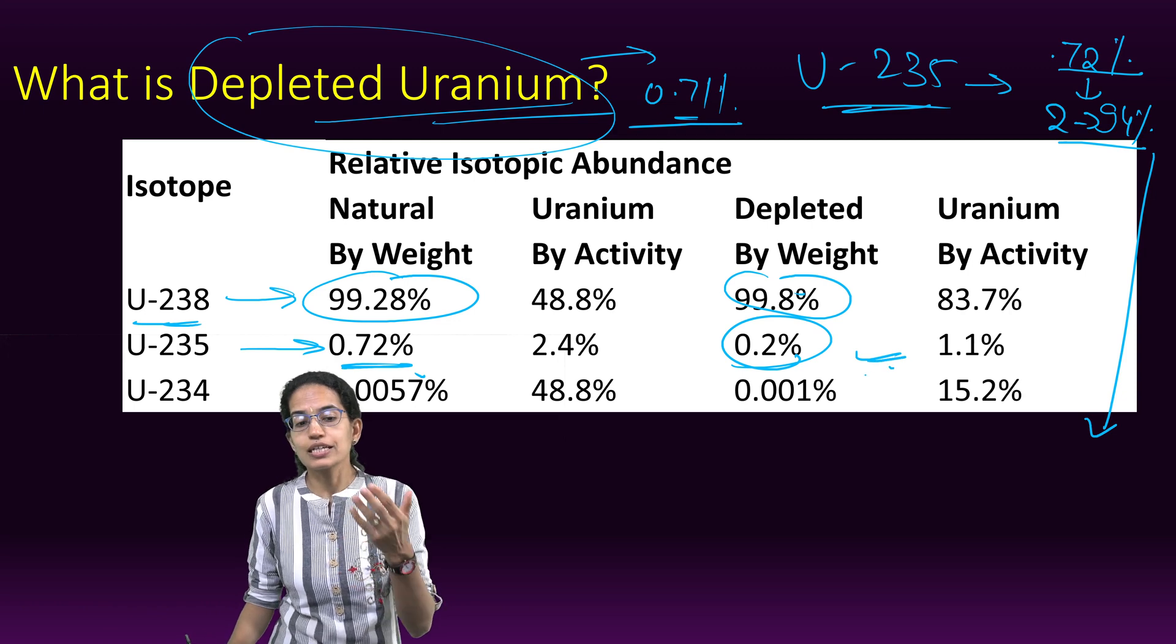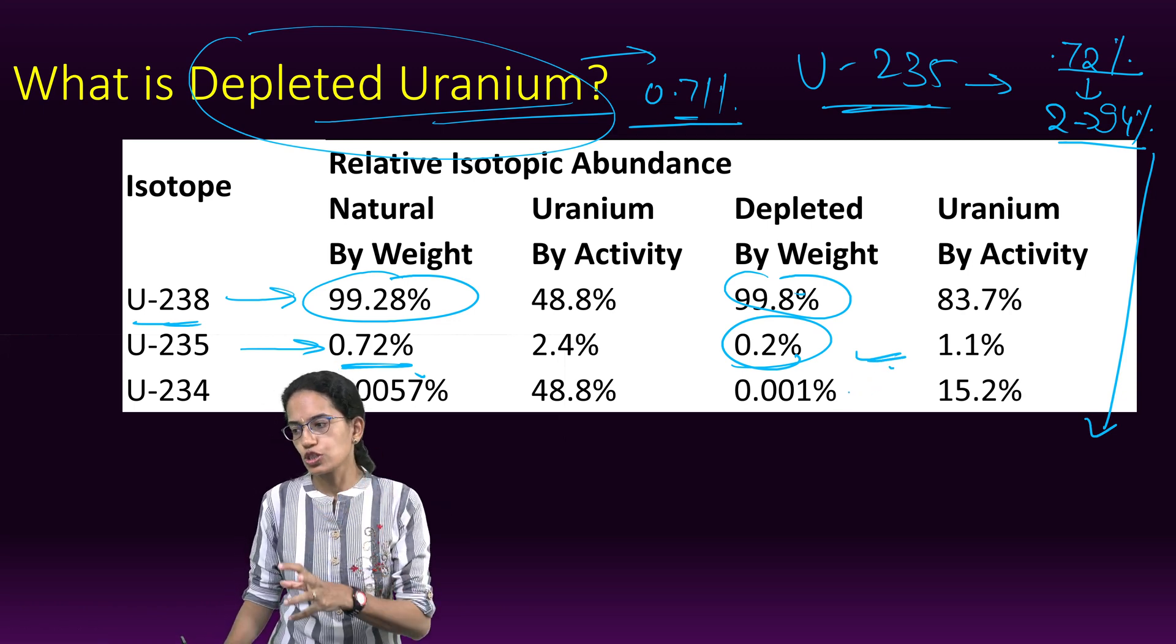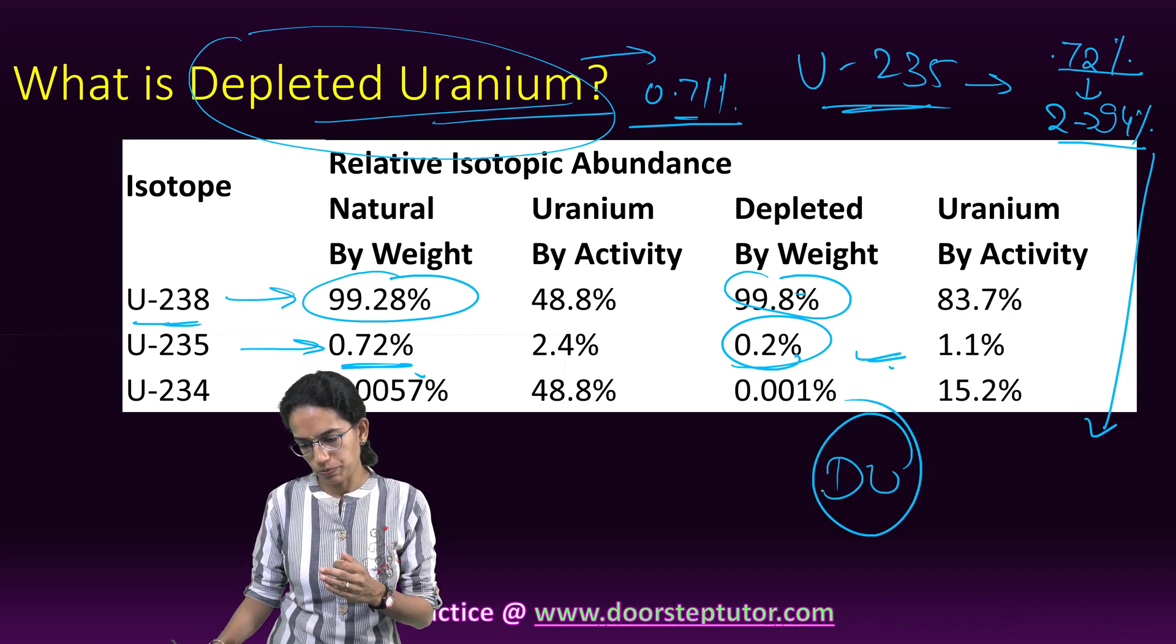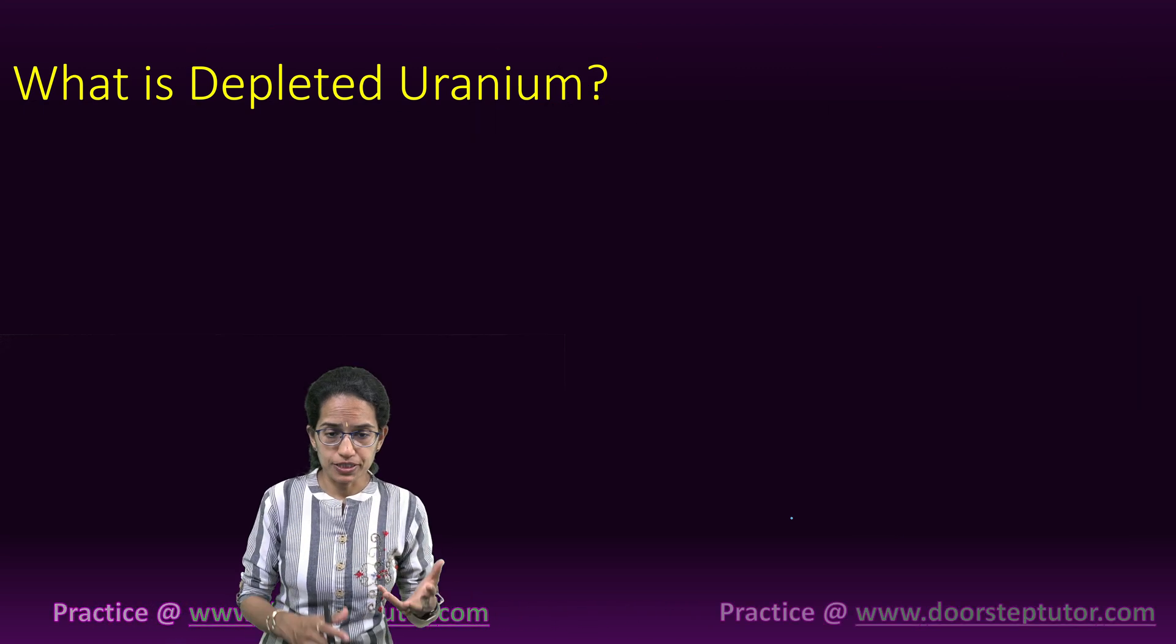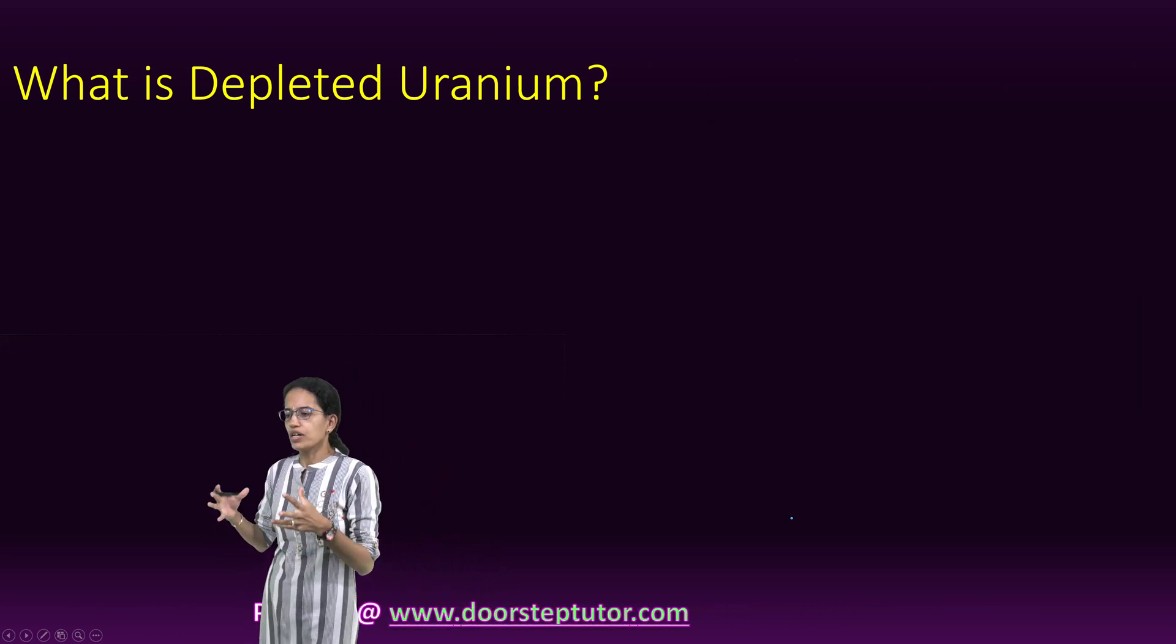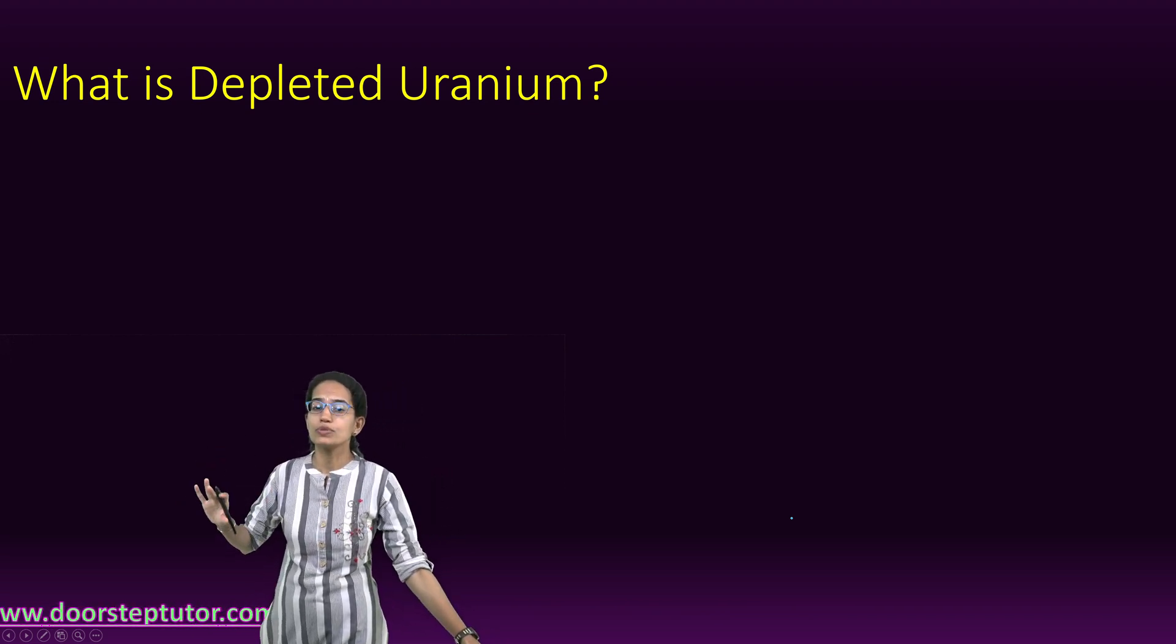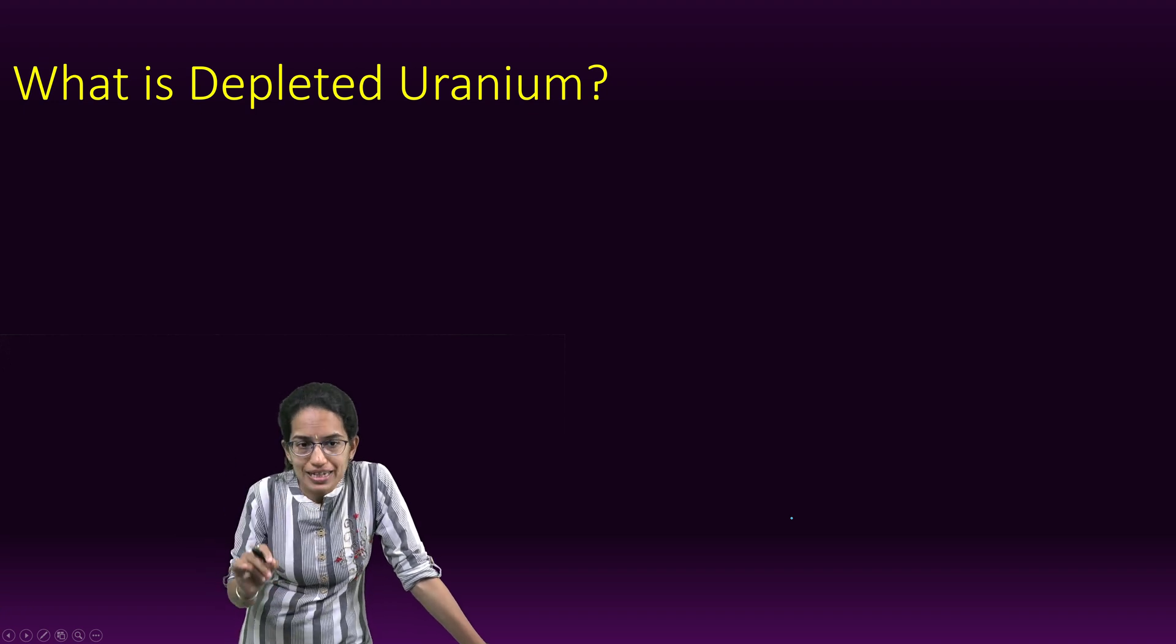Where is depleted uranium used? It is mainly used for military purposes - in armors and in the nose of missiles. Therefore, it has a very significant role in arms, ammunition, and the military segment.